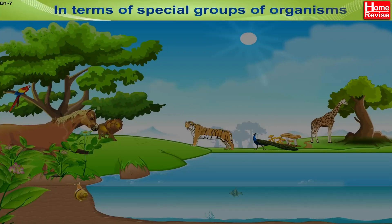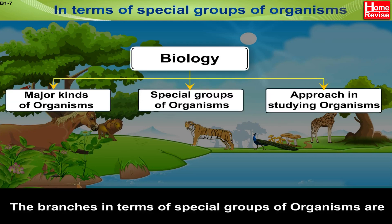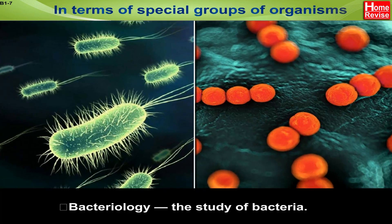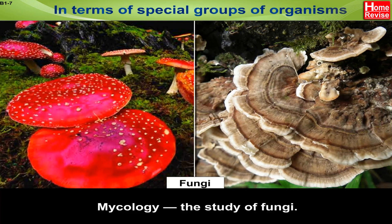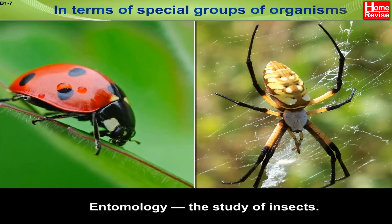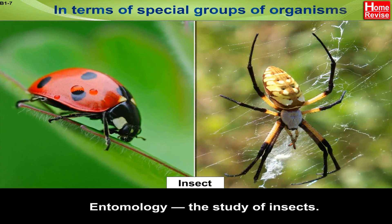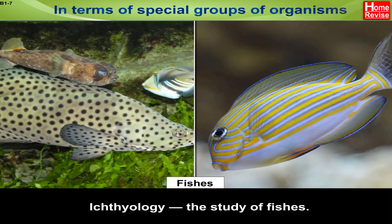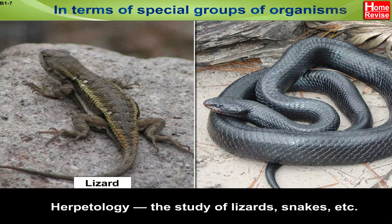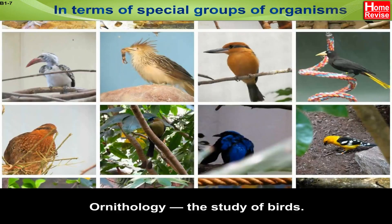In terms of special groups of organisms, the branches are: Bacteriology — the study of bacteria; Virology — the study of viruses; Mycology — the study of fungi; Entomology — the study of insects; Ichthyology — the study of fishes; Herpetology — the study of lizards, snakes, etc.; and Ornithology — the study of birds.